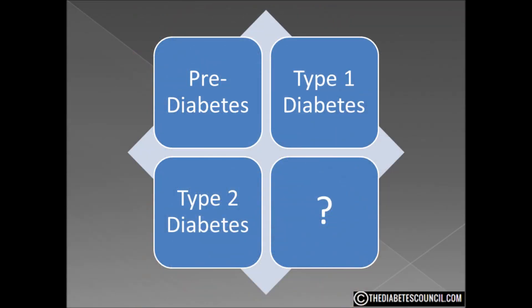We hear the term diabetes and automatically we think we know what it is, right? Well, those of us with diabetes probably do know that there are two or maybe three types depending on how you want to classify it. Some will call pre-diabetes a form of diabetes, and I guess that is true, kind of like preschool is kind of like school. Then there are type 1 and type 2 diabetes. And don't forget about gestational diabetes — we will talk briefly about that one at the end. In this video I will attempt to give you the similarities and differences in each as well as some possible causes.